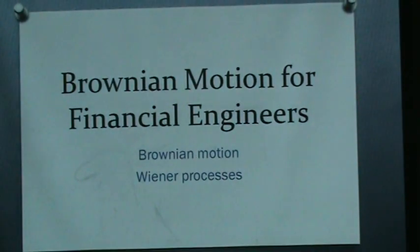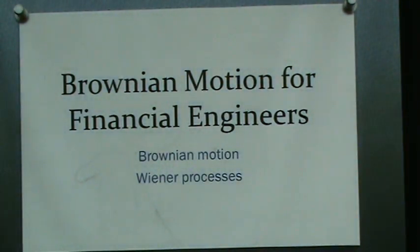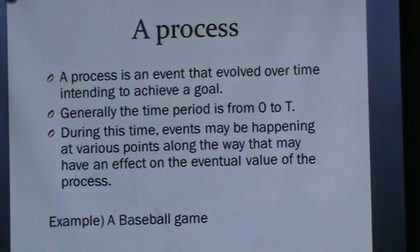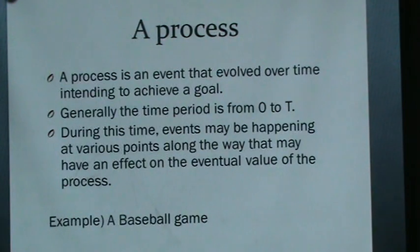We're going to cover an introduction to a topic called Brownian Motion, which in many financial textbooks is also called linear processes. Just want to go over some definitions. A process is an event that evolves over time intending to achieve a goal. Processes generally start at time equals zero and end at time equals capital T — that's the typical notation.